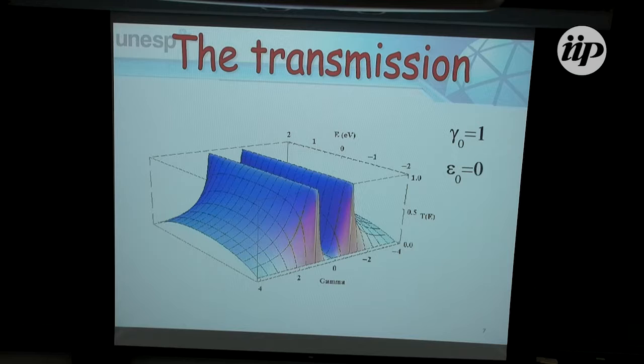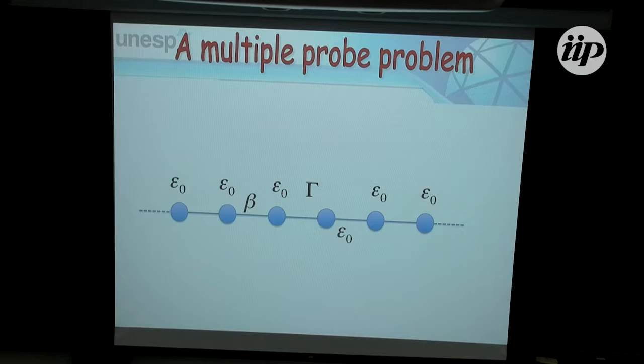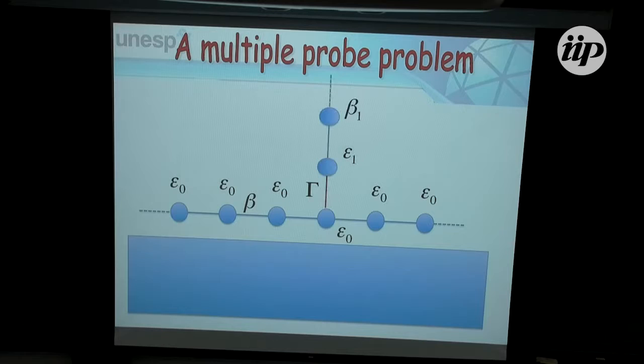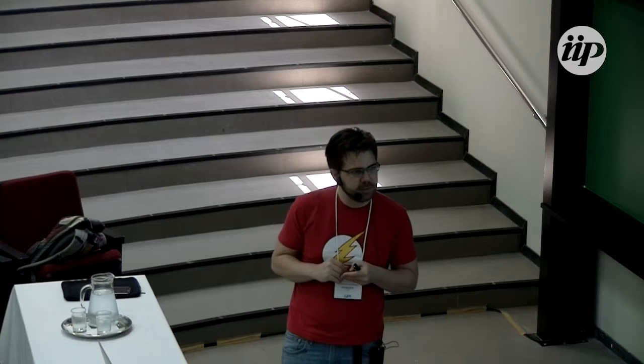Now let's say I have a multiple-probe problem — I want to simulate something where I have a chain of atoms and I want to bring another chain on top of this one. This is a simple one-dimensional model for what would be a metal tip coming to a two-dimensional surface. Here I'll simplify by simulating a one-dimensional system, but in principle I could do the same for the two-dimensional case. I want to calculate the current flowing from or into this metal tip onto this surface, which I'm simplifying as a one-dimensional chain.